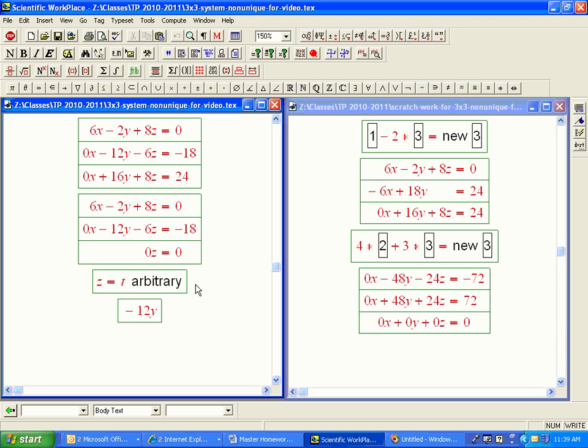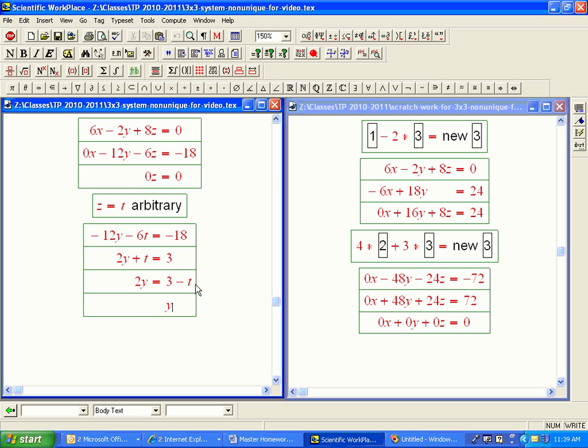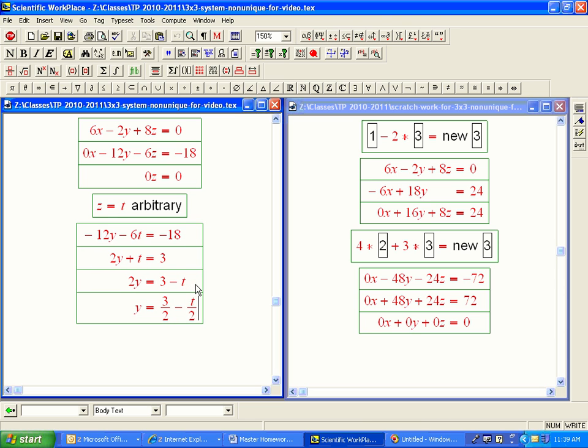So minus 12y minus 6t equals minus 18. You know what? I can simplify that. I can take out a minus 6. So it's just 2y plus t equals 3. Or 2y equals 3 minus t. Or y equals 3 halves minus t over 2.